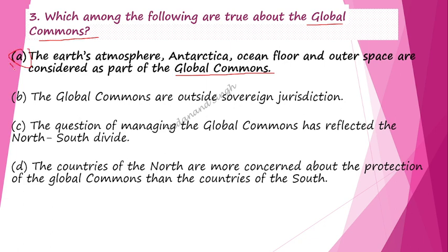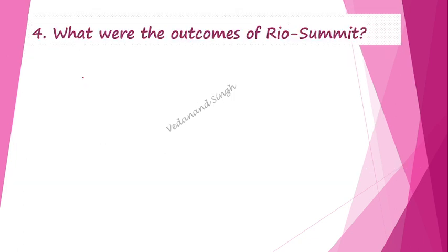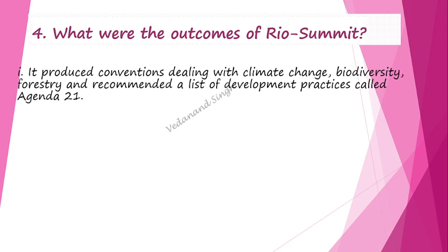The next is an important question from the NCERT book that may appear in your exam. Question 4 asks: what are the outcomes of the Rio Summit? The first outcome is that it produced conventions dealing with climate change, biodiversity, and forestry, and recommended a list of development practices called Agenda 21.